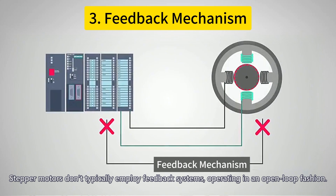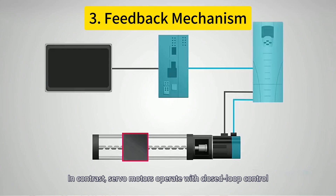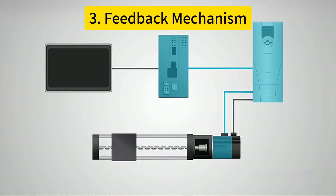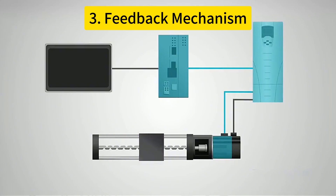These two motors also differ in their control systems. Stepper motors don't typically employ feedback systems, operating in an open-loop fashion. In contrast, servo motors operate with closed-loop control, which allows direct sampling of the built-in encoder's feedback signal, making them more reliable than stepper motors.